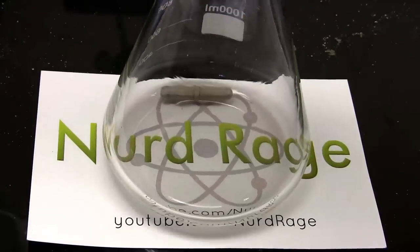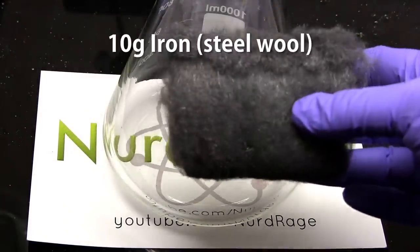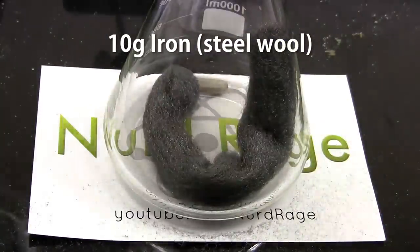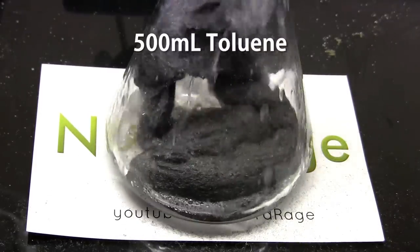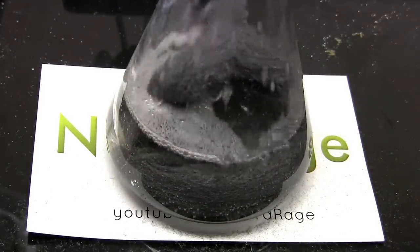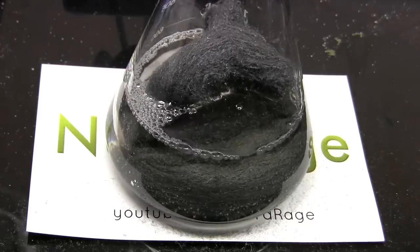First we get a liter sized flask and add some fine steel wool. I'm using a 10g roll but the exact quantity is not critical. Now we add 500mL of toluene. This is sold as a paint thinner solvent. I had to acquire mine by fractionally distilling some lacquer thinner.